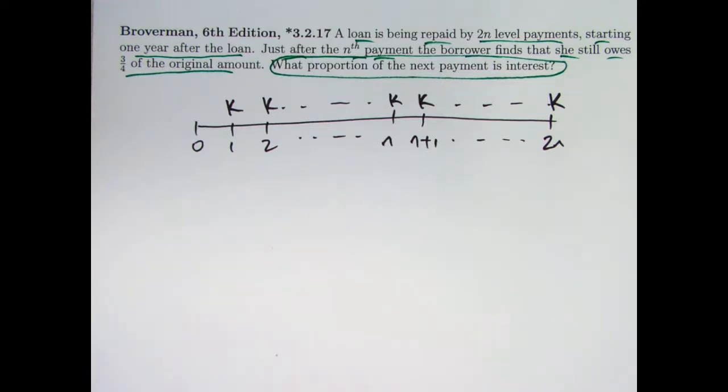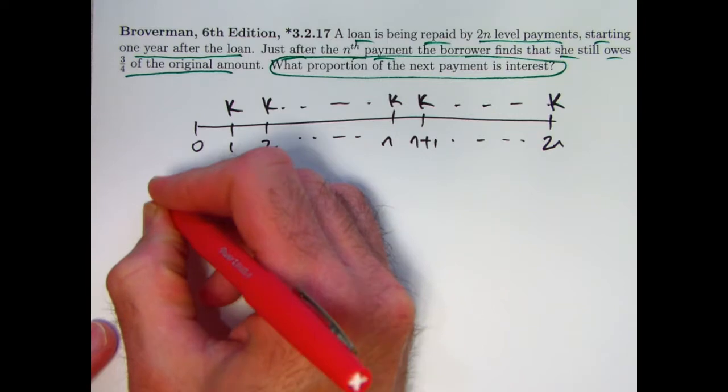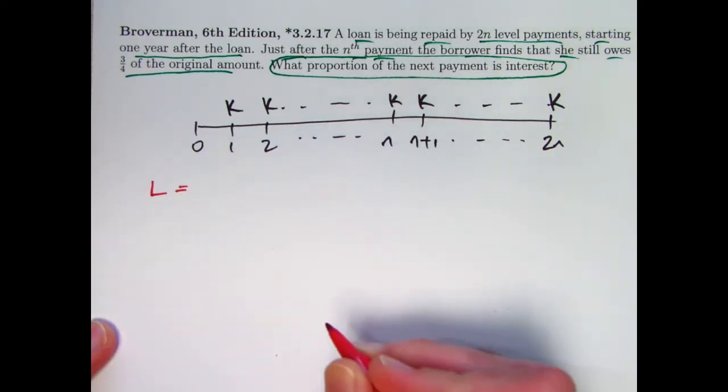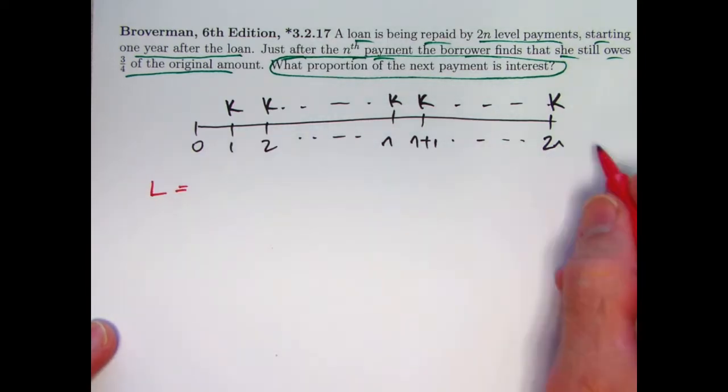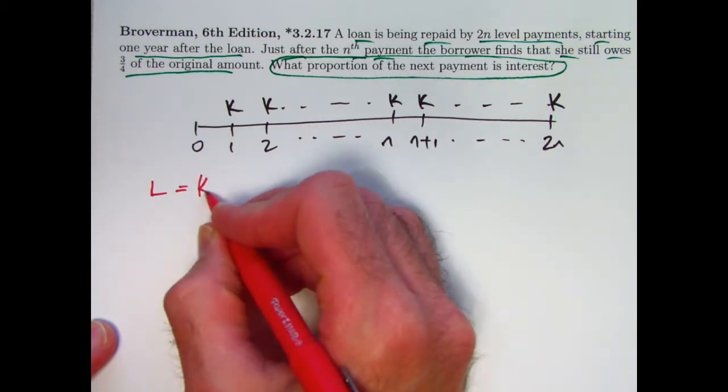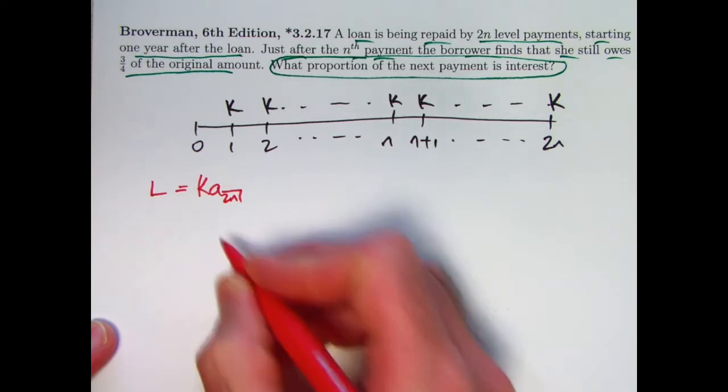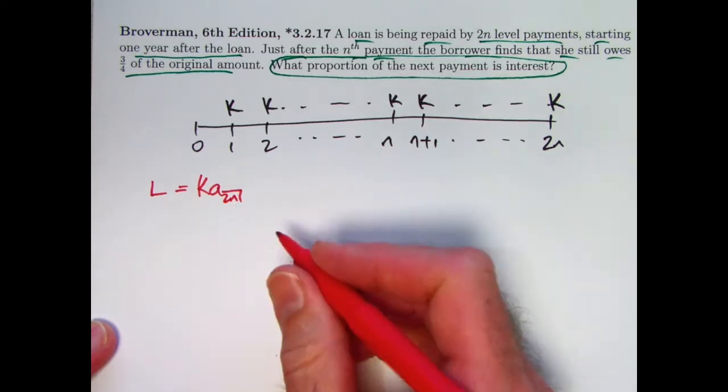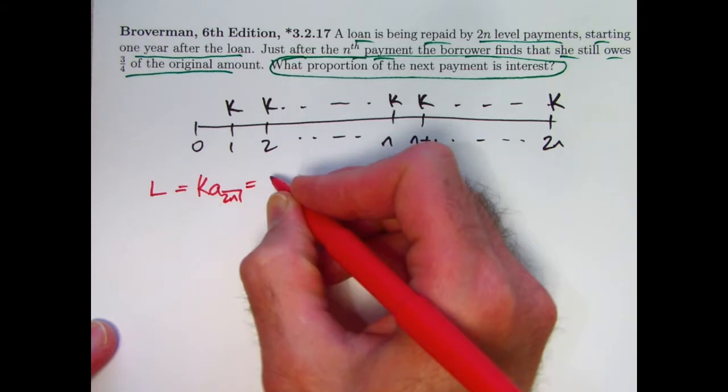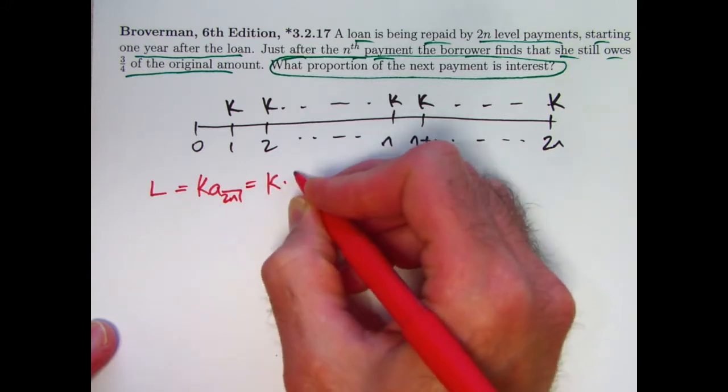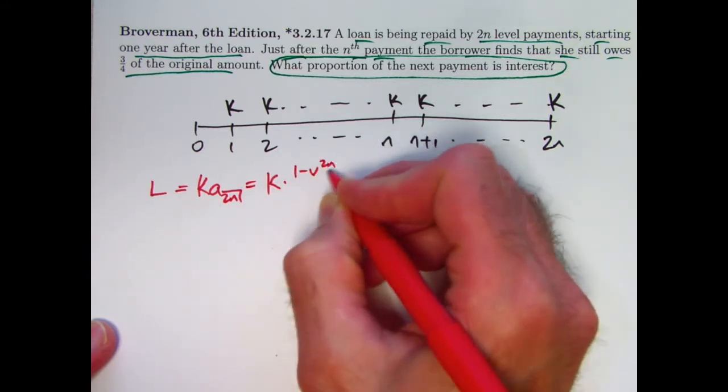I wrote down some equations based on present values that I thought maybe will be helpful, maybe they won't be. We could write down that the original loan amount, call it L, is the present value of all 2N payments as an annuity immediate. There is some annual interest rate here going on. I went ahead and used the formula for that present value: K times (1 - V^(2N))/i.